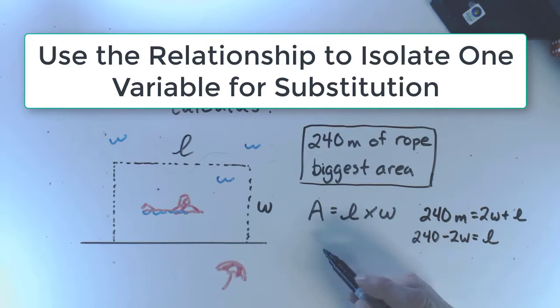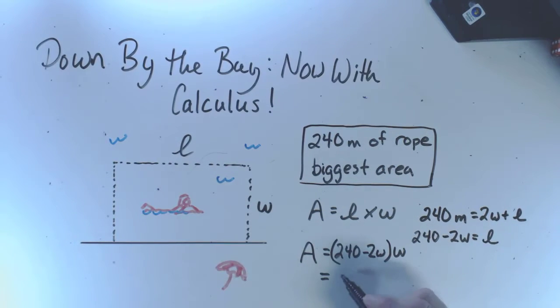Now we can rewrite our area relationship. Area equals length, which we found out is 240 minus 2W, multiplied by W, which nicely becomes 240W minus 2W squared.